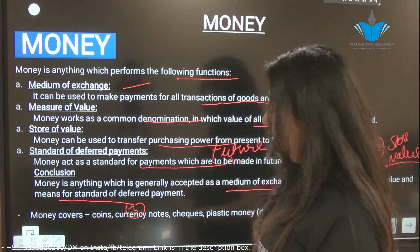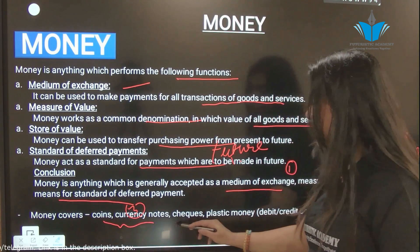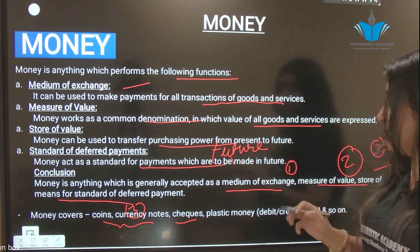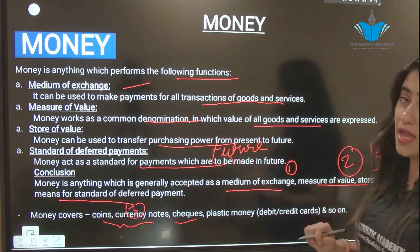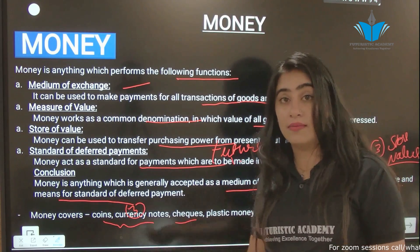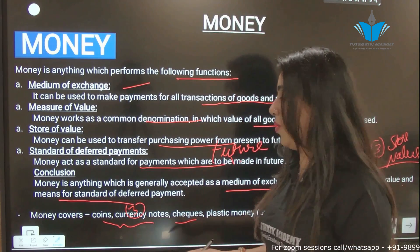So what does money cover? Coins, currency notes, checks, and plastic money — debit or credit cards also come under this. In today's time, plastic money and so on are all forms of money.